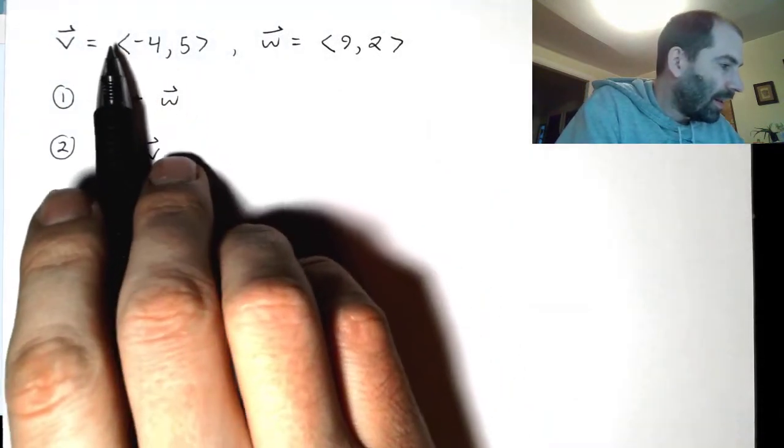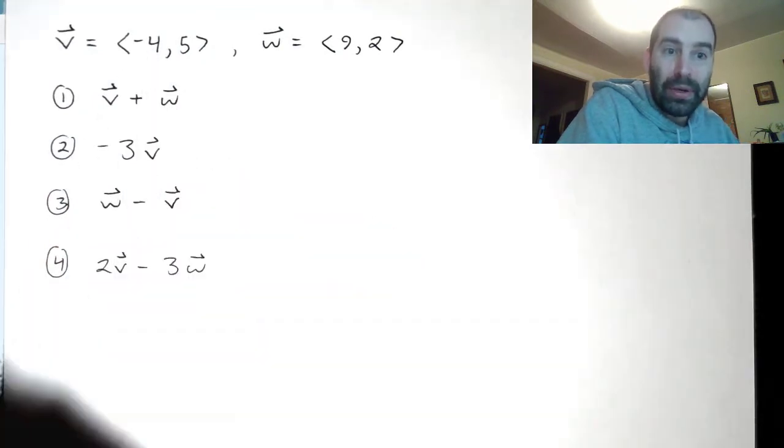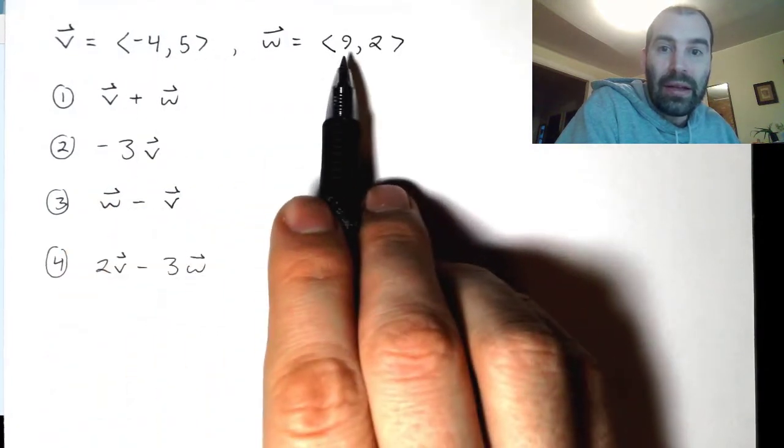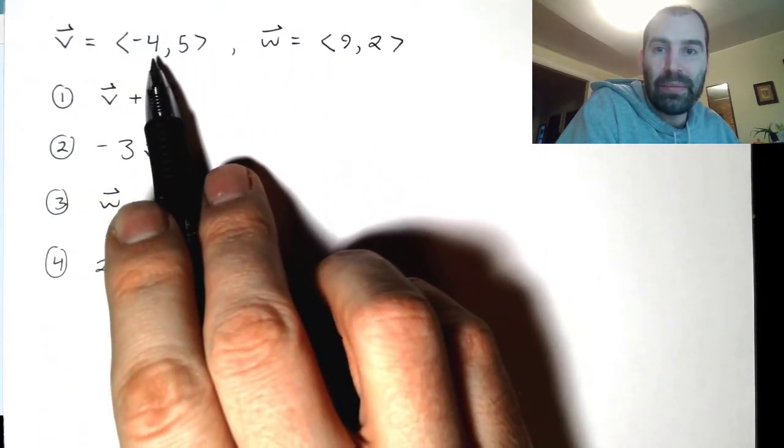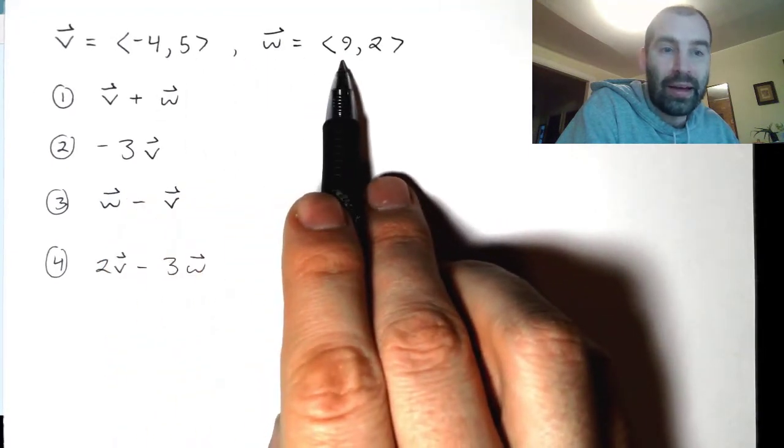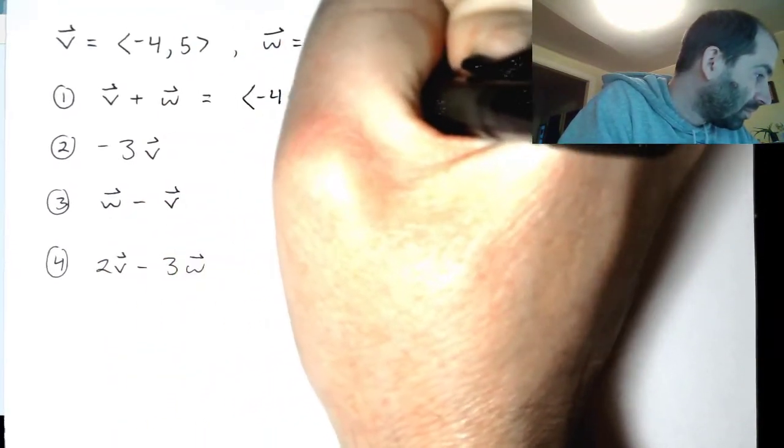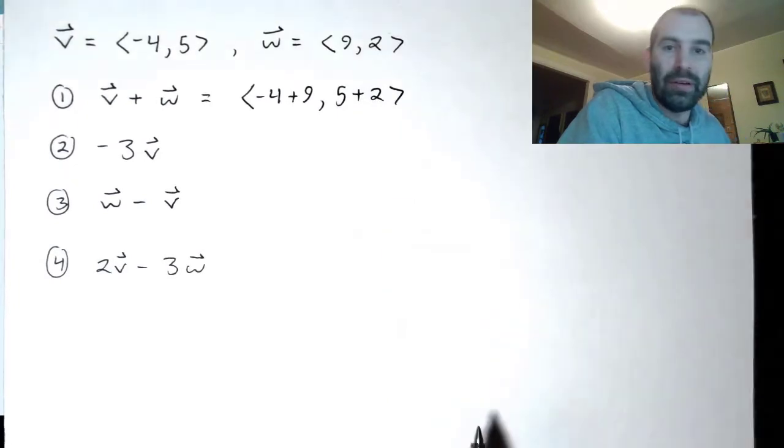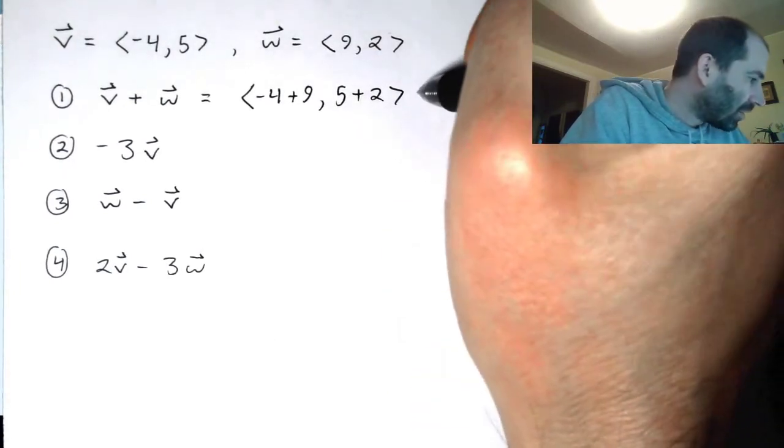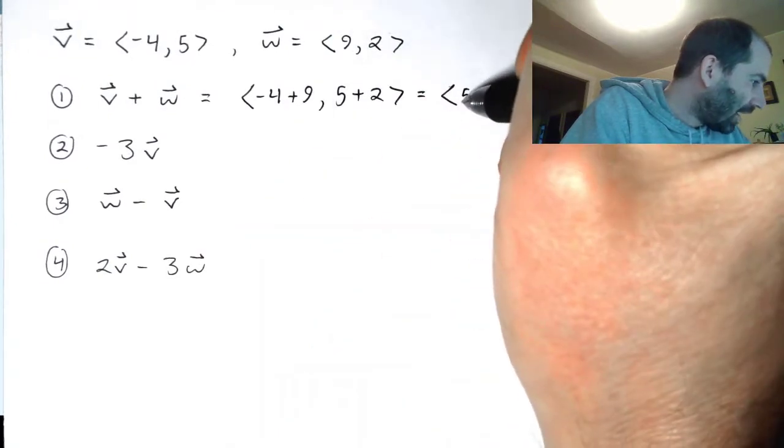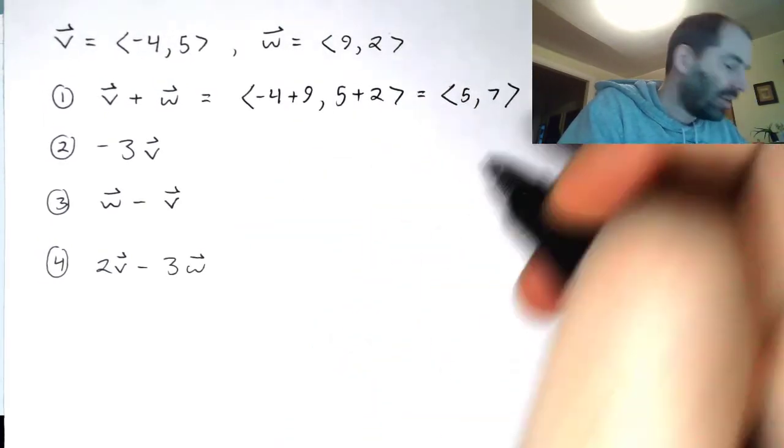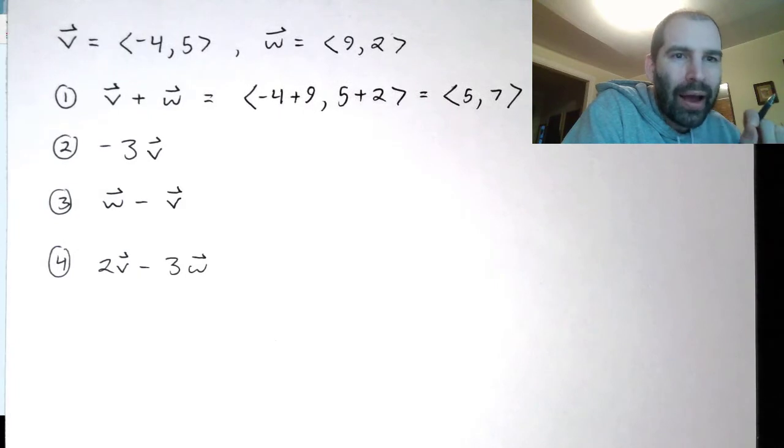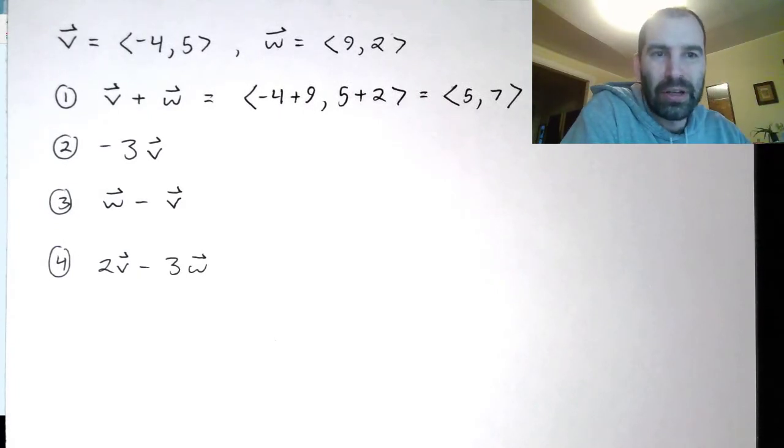All I do—and if you think about the picture, think about what happened in the picture. This should make sense to you. All I do end up doing is adding the components together. So the resulting vector v plus w is going to be negative 4 plus 9 as its first component, and then 5 plus 2 as its second component. You can't get any simpler than that. And so the resulting vector is negative 4 plus 9 is 5, 5 plus 2 is 7. So we have our resulting vector. Think about this and think about why this makes sense from the picture description that we had just talked about.